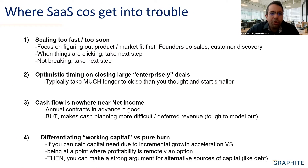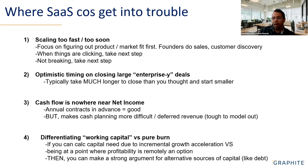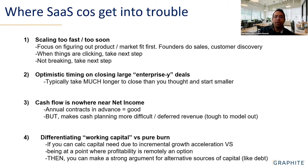Where SaaS companies get into trouble: one is scaling too fast, too soon, pre-product-market fit. Sometimes you have those early couple of deals, you're getting positive feedback from potential customers, and then you quadruple headcount and burn really increases. Taking incremental steps when you're really confident that you're there is the best way to do it.